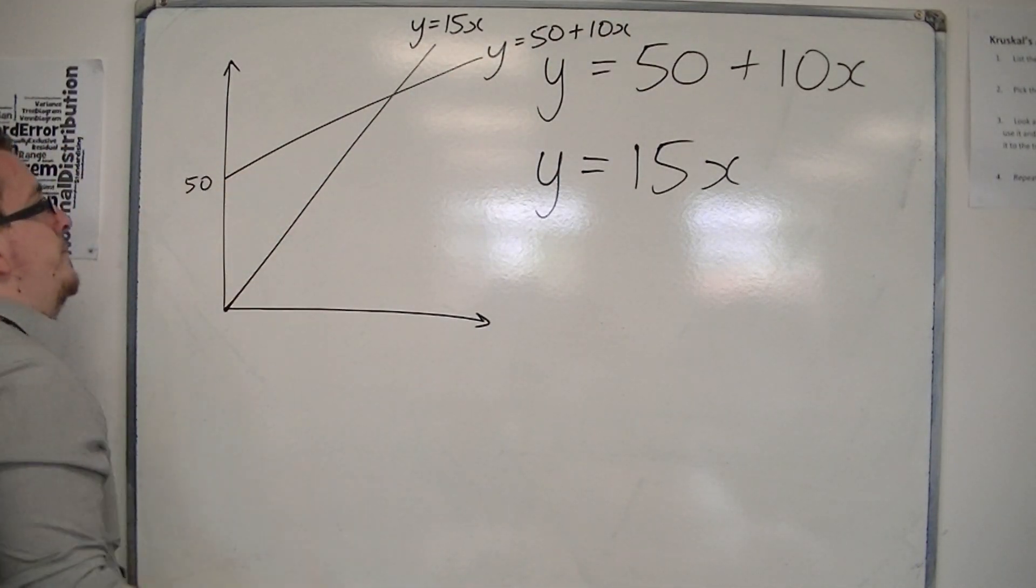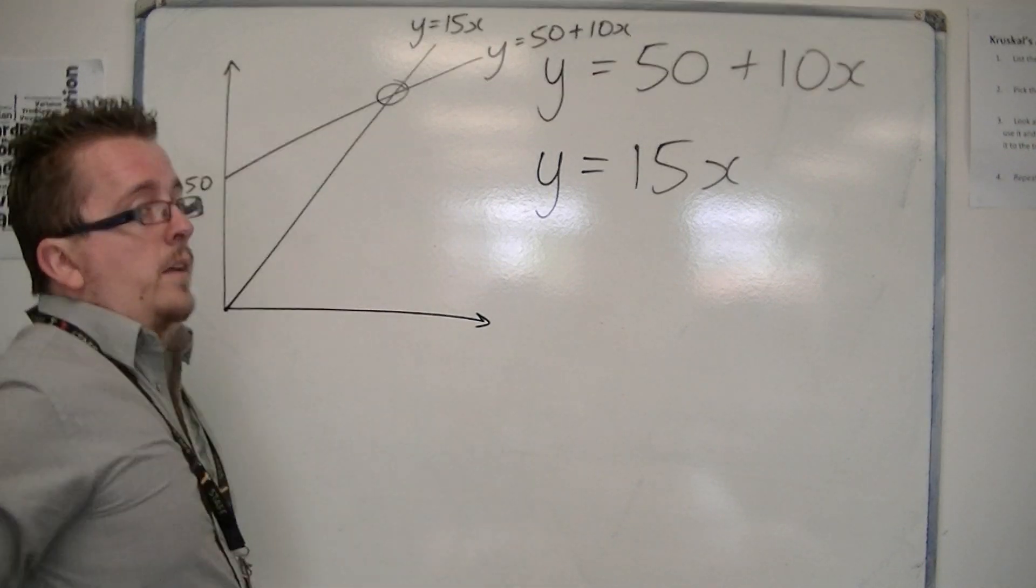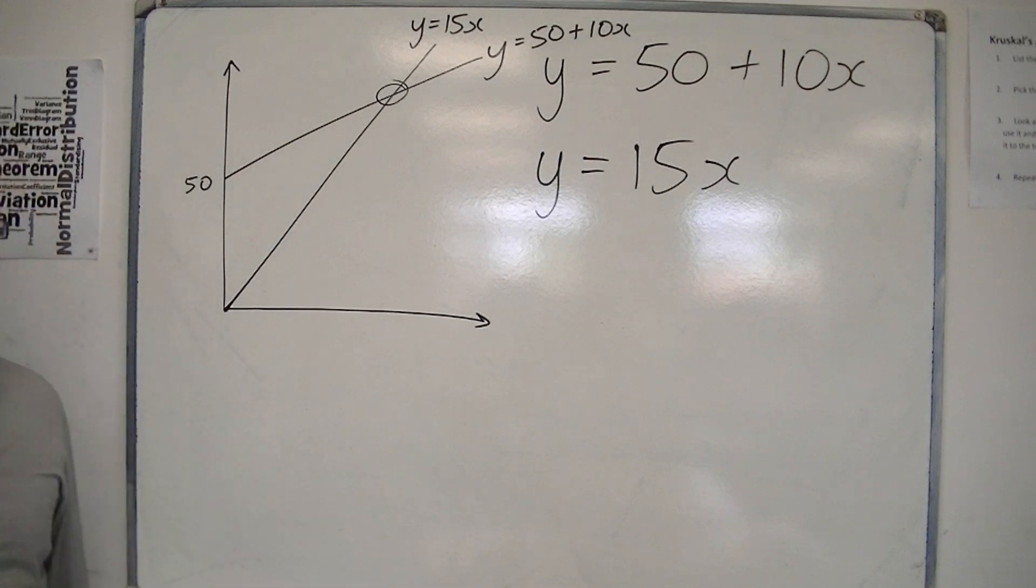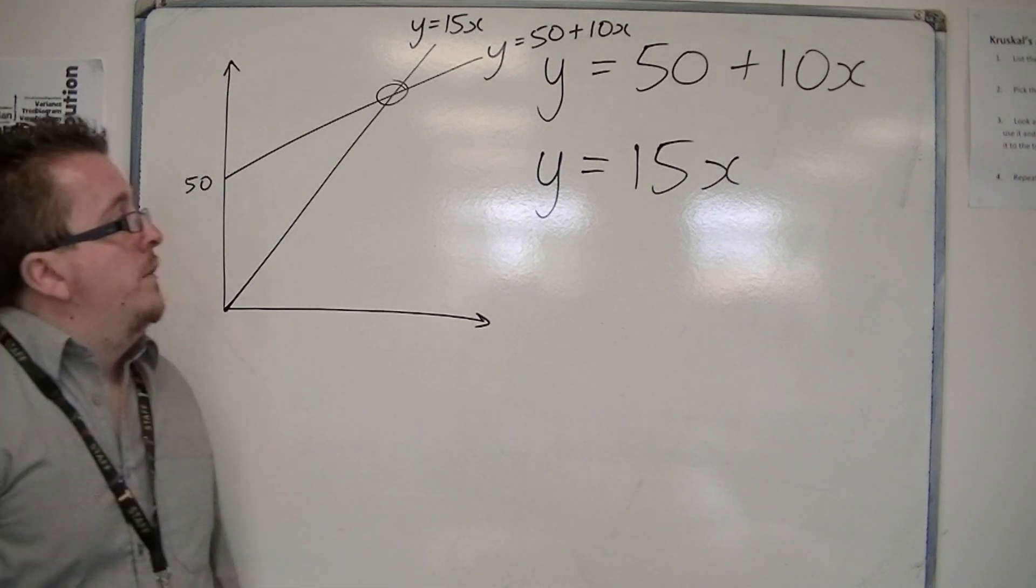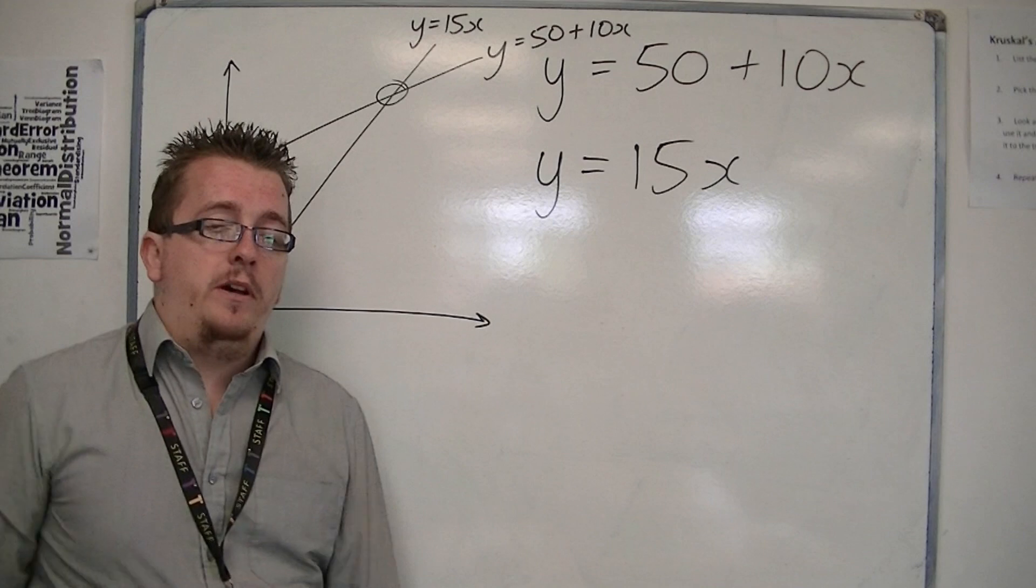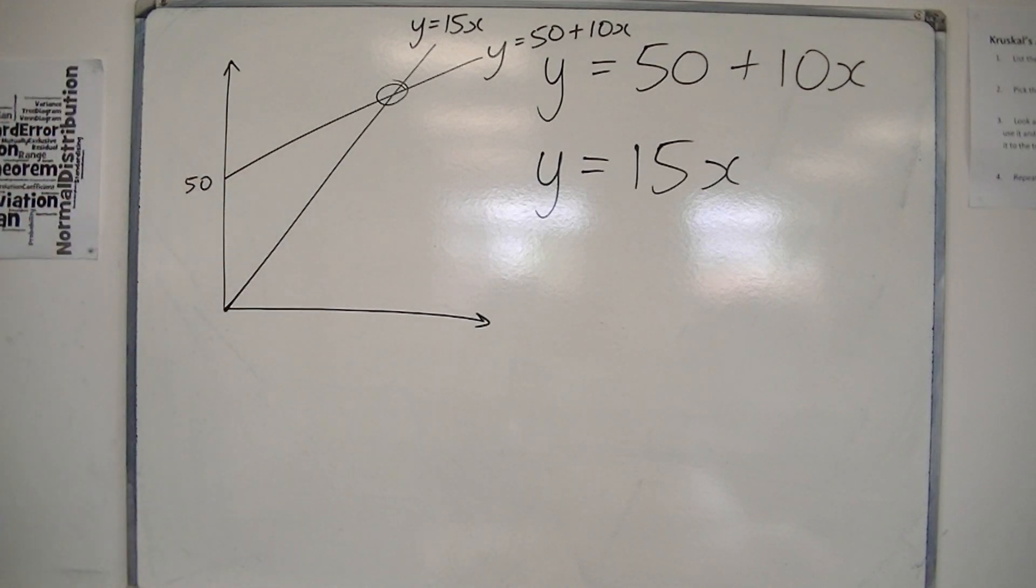And then you've got this other charge of £50 plus £10 a month, which would look something like this, starting off at about £50. And at some point for a certain number of months, you will have these two lines meeting at some point.